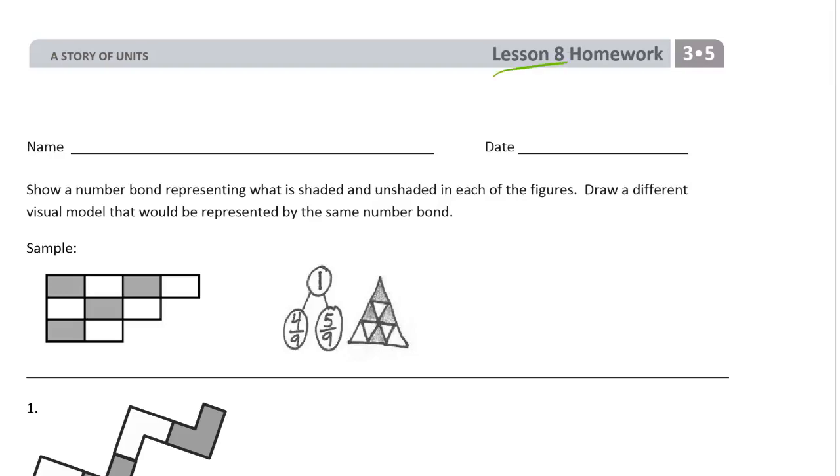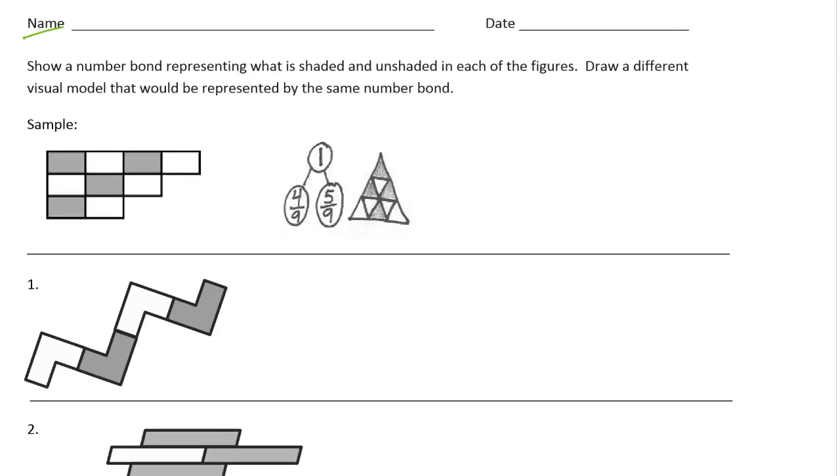Welcome to the homework for Lesson 8. This is Module 5 of Grade 3. Please write your name here first. We're showing a number bond for fractions. Show a number bond representing what is shaded and unshaded in each of the figures. Draw a different visual model that would be represented by the same number bond.